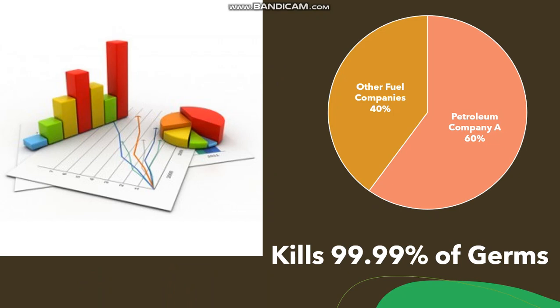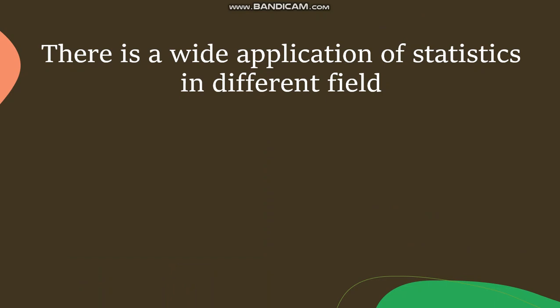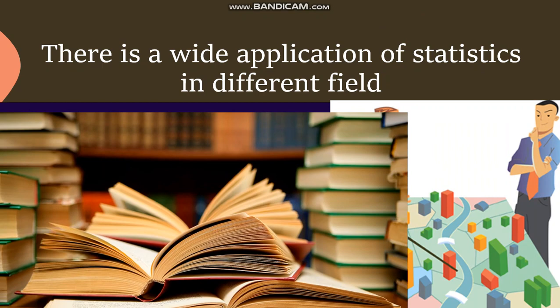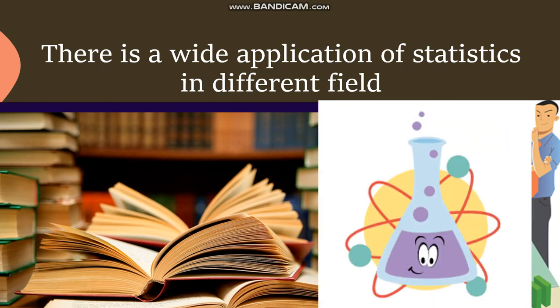Statistics is also used to show the quality of a product — just like the claim of Safeguard soap, which advertises that their soap can kill 99.99% of germs. There is a wide application of statistics in different fields such as astronomy, business, education, sciences, and more.